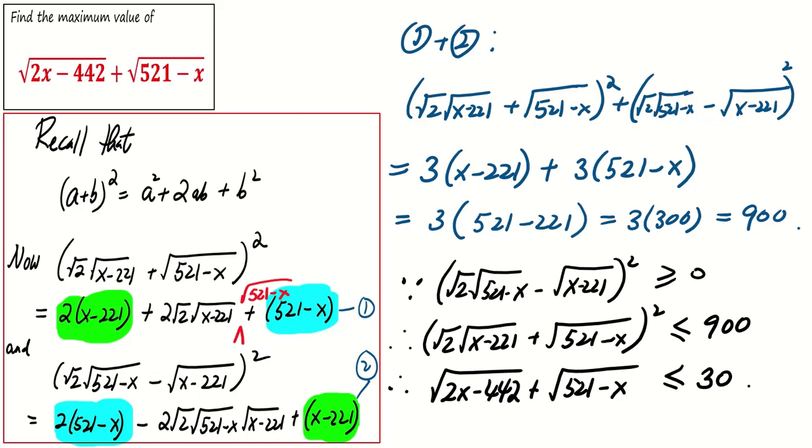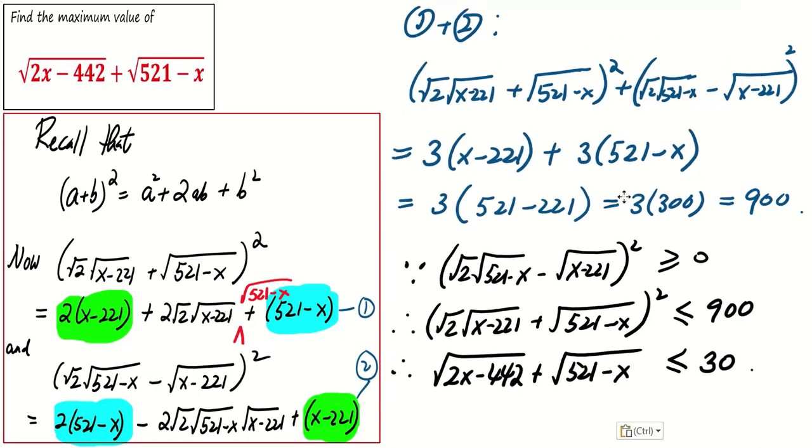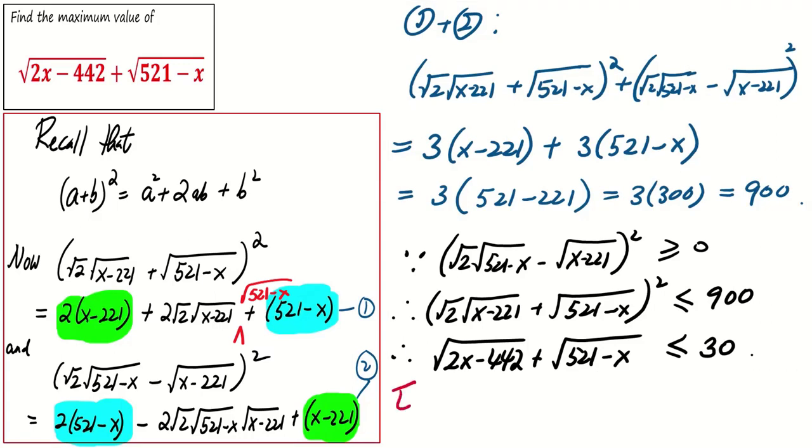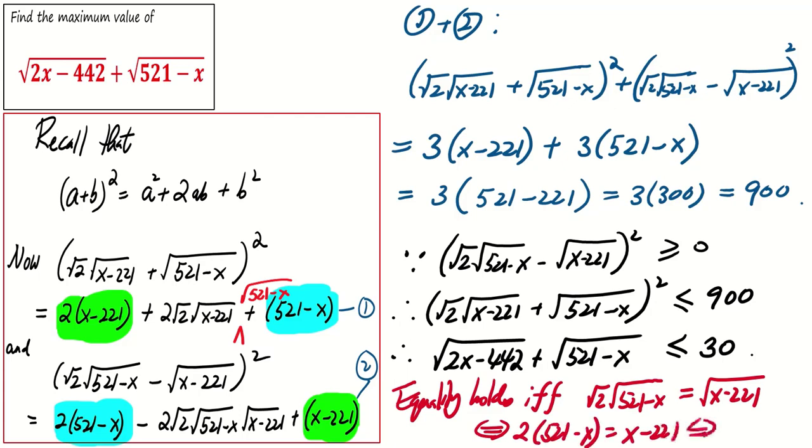But we can't definitely claim that 30 is the maximum. To do that, we must consider that the equality holds if and only if square root 2 square root of x minus 221 is equal to square root of 521 minus x. And we see that this is possible, and upon solving, we find that x equals 421.